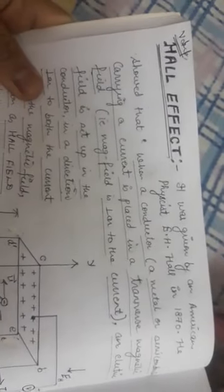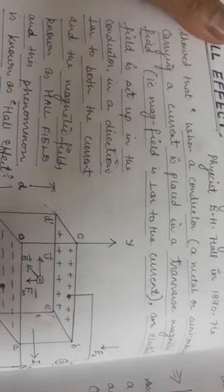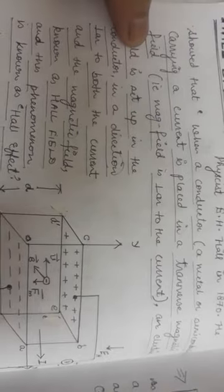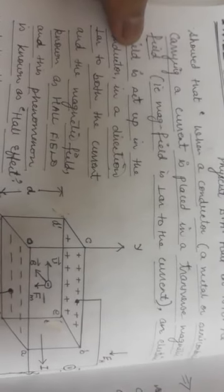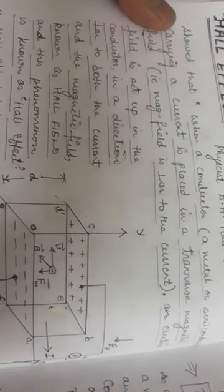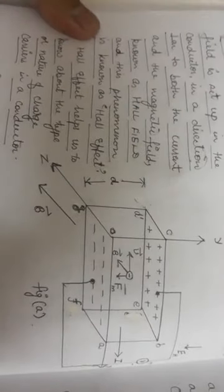Good afternoon dear students. In this video I am going to discuss the Hall Effect. This topic belongs to section B of paper C. The Hall Effect was given by American physicist E.H. Hall in 1879. He showed that whenever a conductor — which may be a plate or a semiconductor — carrying a current is placed in a transverse magnetic field (perpendicular to the current), an electric field is automatically set up in a direction perpendicular to both the current and the magnetic field, known as the Hall field. This phenomenon is known as the Hall Effect.